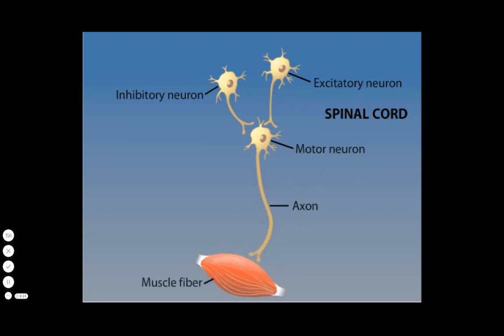Signals from excitatory neurons are often combined with signals from inhibitory neurons. The two competing signals may cancel each other out, reducing the number of excitatory signals that reach the muscle fiber and thereby modulating the force of muscle contraction.